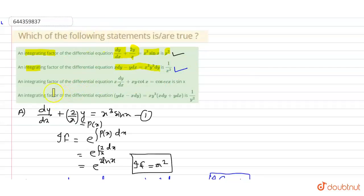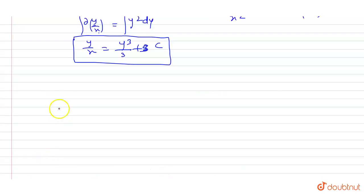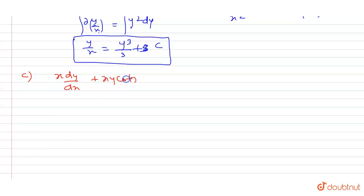Now we check option C. An integrating factor of the differential equation x dy/dx plus xy cot x equals cos x is sin x. We check option C: x dy/dx plus xy cot x equals cos x. By using the formula of integrating factor, first of all we divide x on both sides.